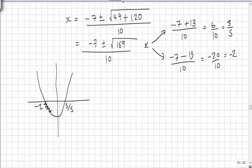We are interested particularly in all values less than or equal to 0, which would be everything under the x-axis. So therefore x can take values greater than or equal to minus 2 and less than or equal to 3 fifths.